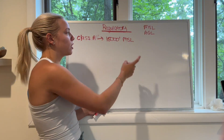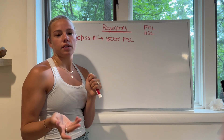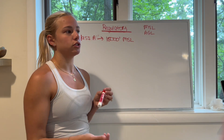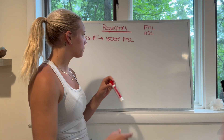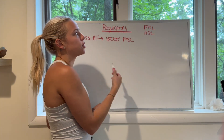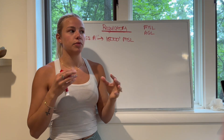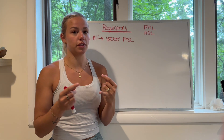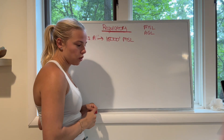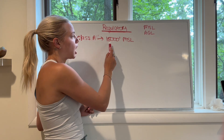Your altimeter reads MSL. So if you're sitting on the ground at your airport and the field elevation is 700 feet, your altimeter reads 700 feet because you're 700 feet above mean sea level. As you climb, the altimeter reads where you're at in MSL. Once you get to 18,000 feet, you're in Class Alpha. Each airspace's floors and ceilings are recorded in either AGL or MSL, and you have to be IFR-rated to fly at Class Alpha altitude.